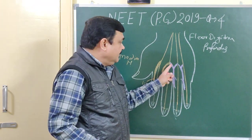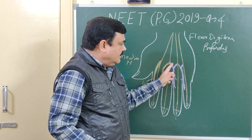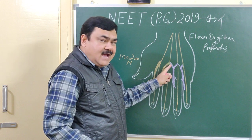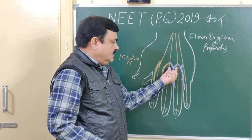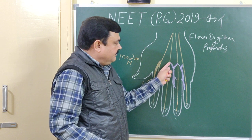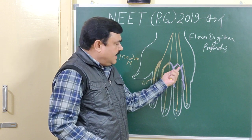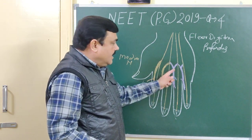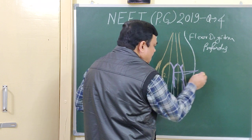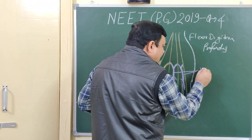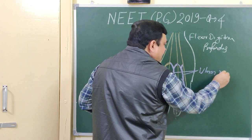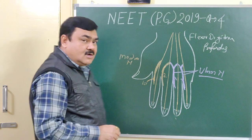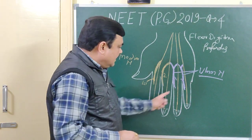The third and fourth lumbricals are bipennate. These are bipennate and arise from the adjacent sides of two tendons. The third arises from the second and third tendon, and the fourth lumbrical arises from the third and fourth tendon. The nerve supply of these two is the deep branch of the ulnar nerve. These are inserted on the dorsal digital expansion of the corresponding digits.